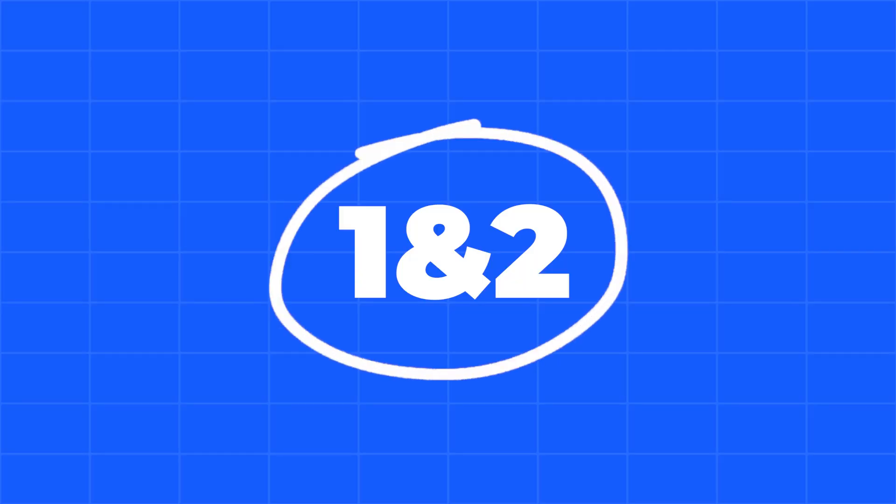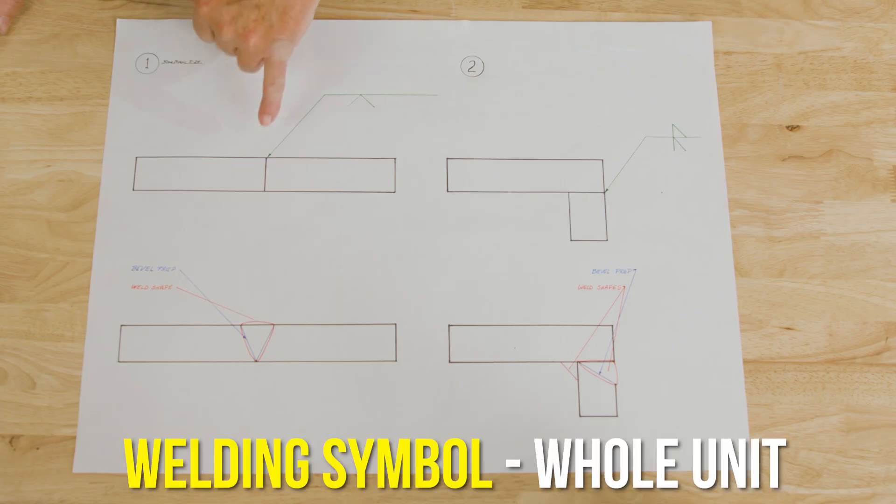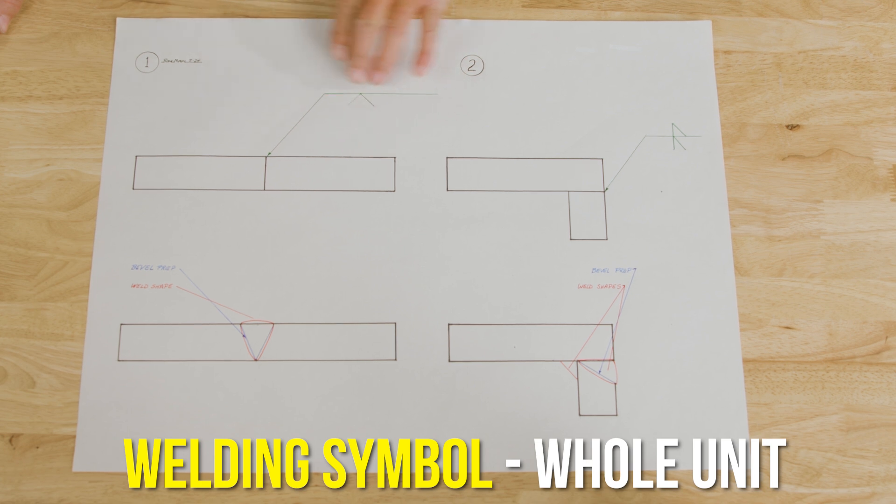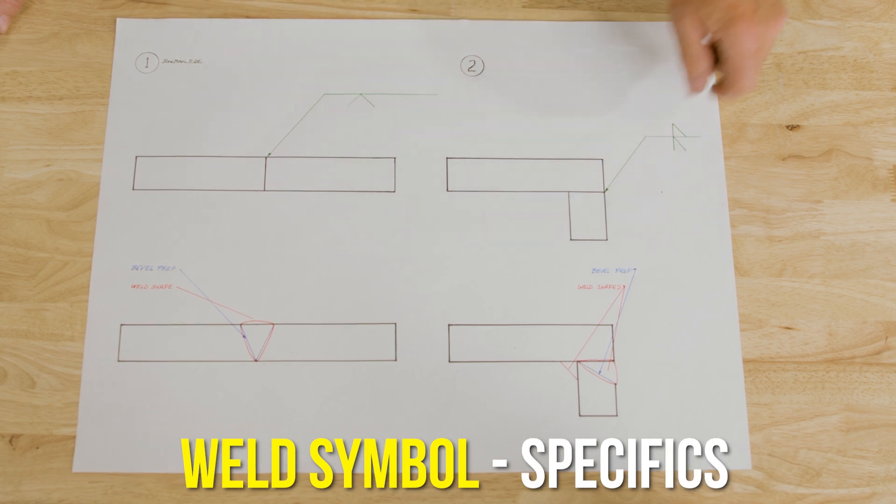Here's a drawing with welding symbols and weld symbols on it. The welding symbol is the whole unit. The weld symbols are the little marks that make it more distinctive.